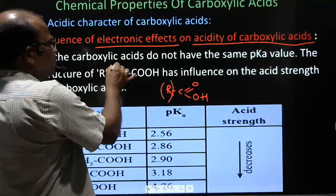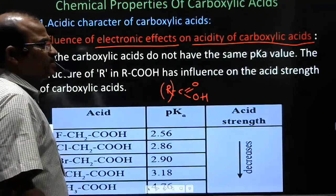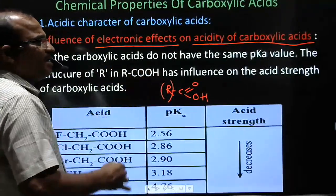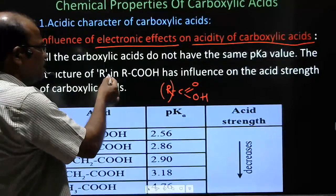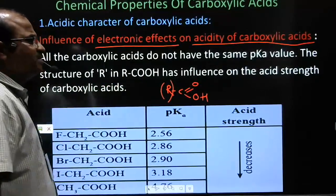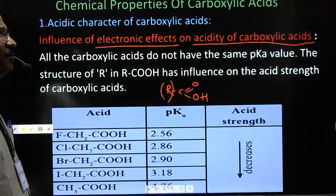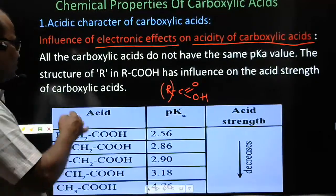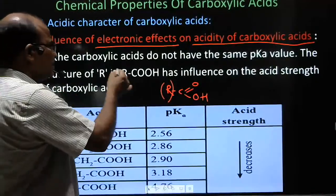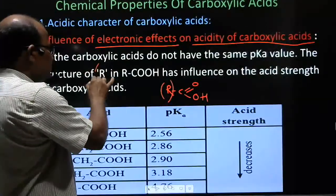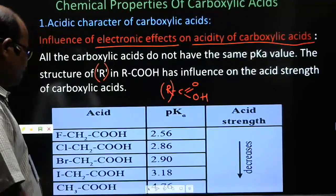All carboxylic acids do not have the same pKa value. The structure of R in RCOOH has an influence on the acid strength of the carboxylic acid — the acid strength is dependent on R.